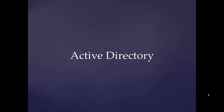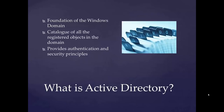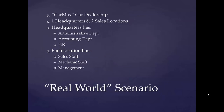Now that our server is a domain controller and we've installed Active Directory Domain Services, we need to configure Active Directory. What is Active Directory? It is the foundation of the Windows domain — essentially a catalog of all registered objects in the domain that provides authentication services and security principles allowing users and computers to access resources they've been granted permissions to. We're going to start with a real-world scenario, providing realistic examples of how Active Directory might be set up as if we were starting fresh for a real business.